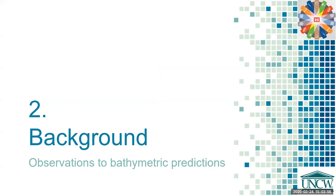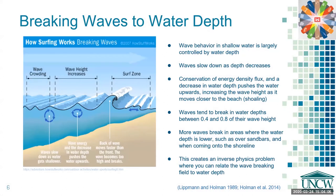Now I'm going to talk about some ways people have tried to take observations of the sea surface and turn them into reliable bathymetric predictions. The mechanism that we use here is breaking waves to water depth. Wave behavior in shallow water is largely controlled by water depth. As waves come onto the beach, they get slower as water gets shallower.